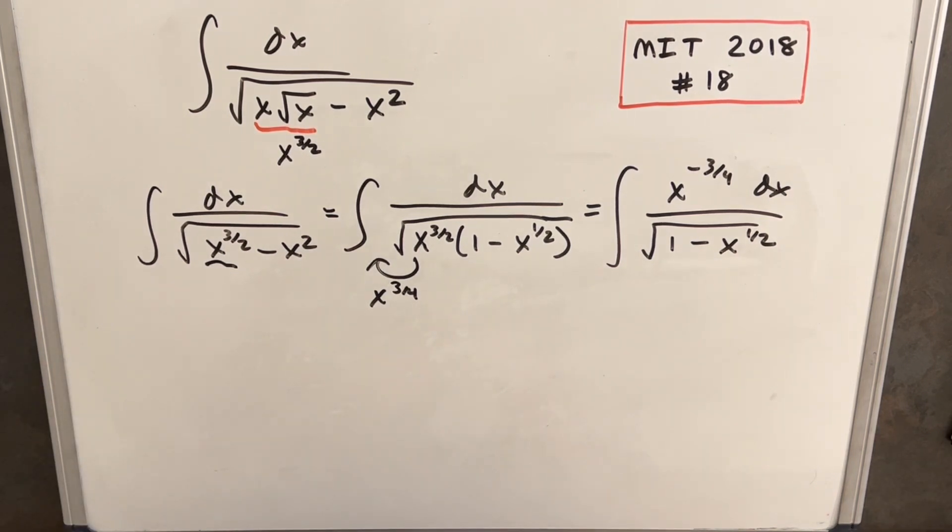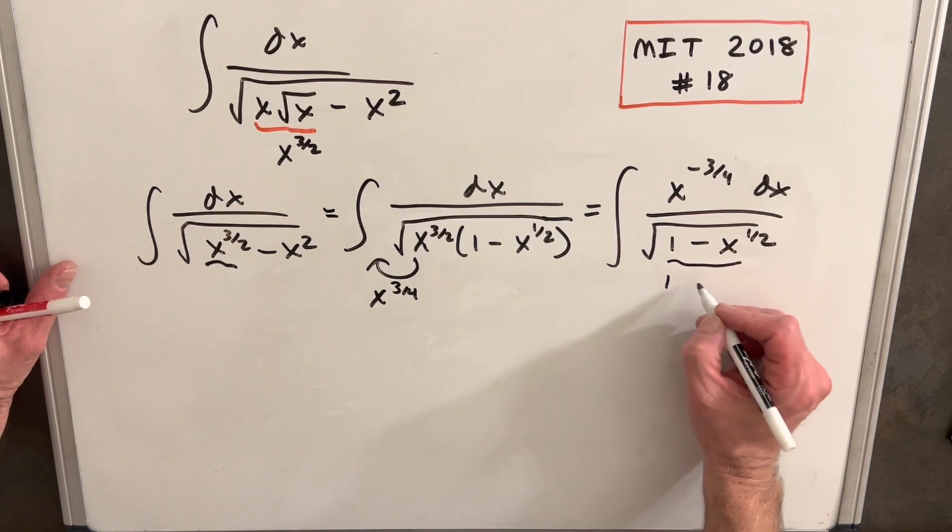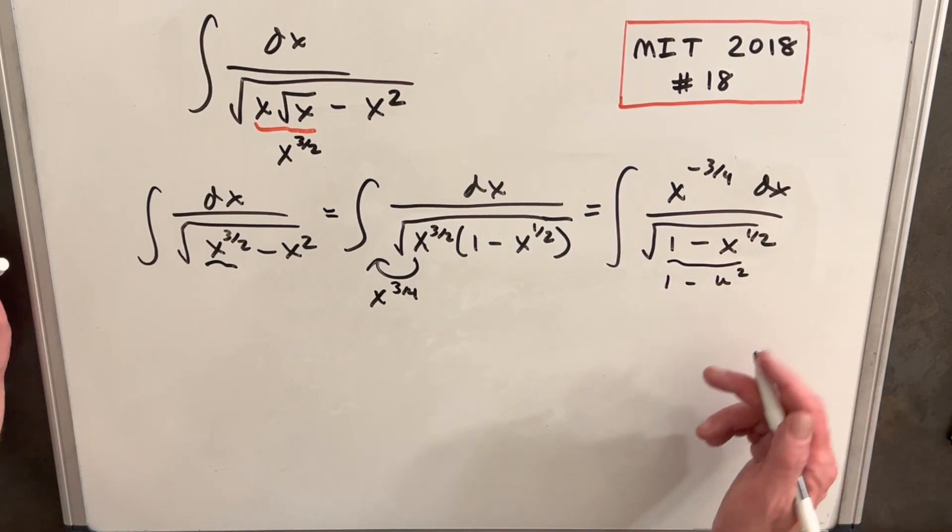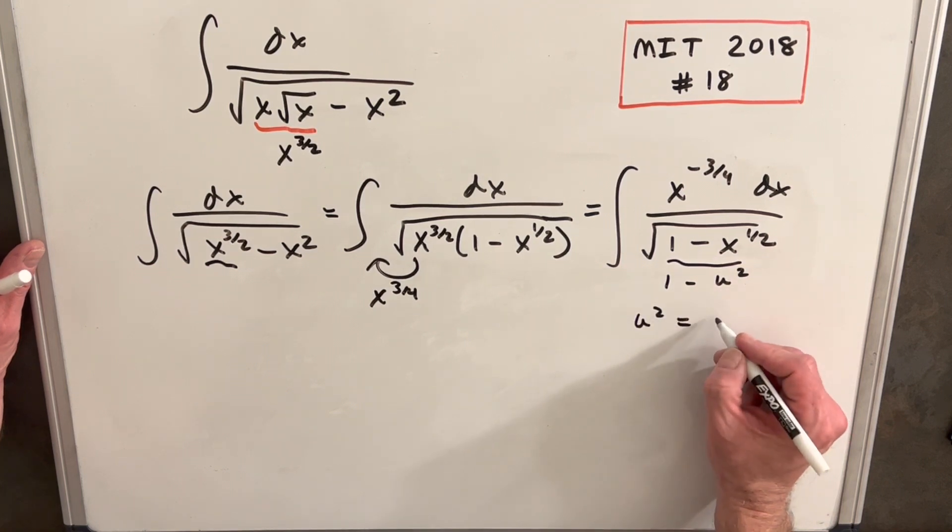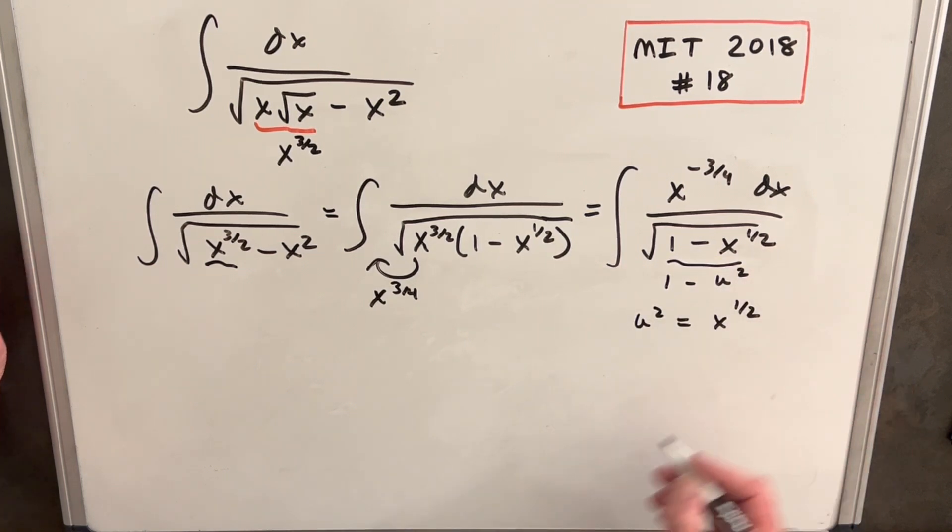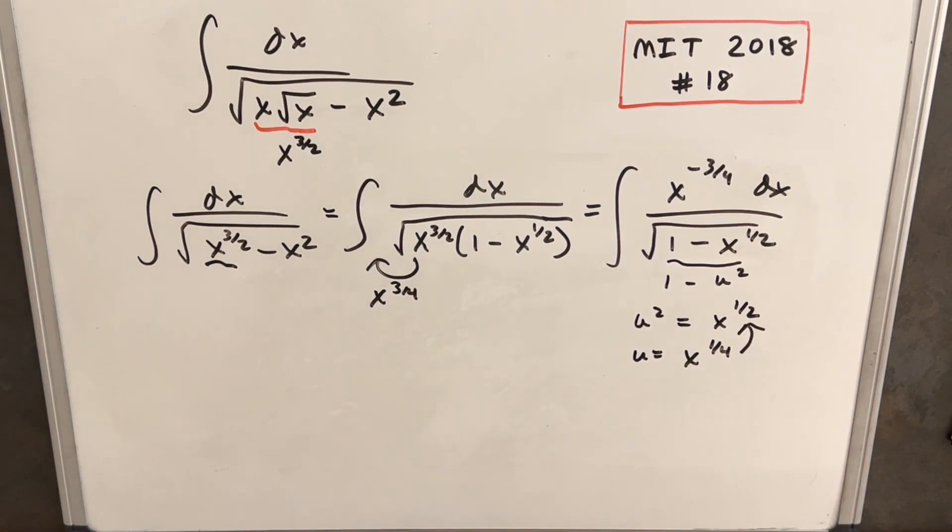Okay, so instead of trying to make this whole thing our u, what we can do is aim for the form of 1 minus u squared. We know how to deal with that. So we're saying we want our u squared to be x to the 1 half. And if that's the case, our u is going to be x to the 1 fourth, right? Just noticing if you square that, you get back to 1 half.